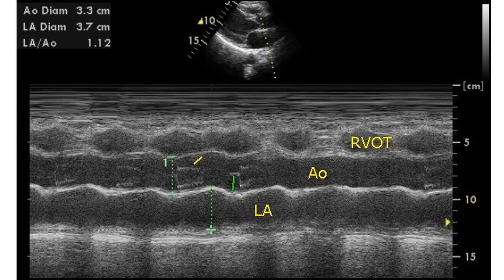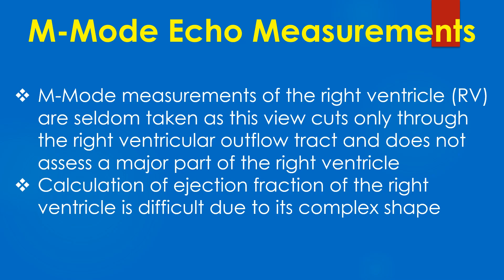This image illustrates the measurement of aorta and left atrium by M-mode. Aortic dimension is measured in end diastole while left atrial dimension is measured in end systole. M-mode measurements of the right ventricle are seldom taken as this view cuts only through the right ventricular outflow tract and does not assess a major part of the right ventricle.